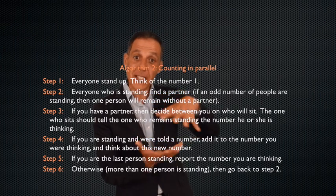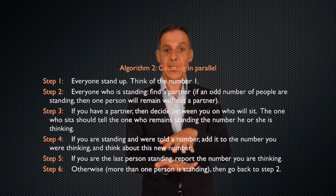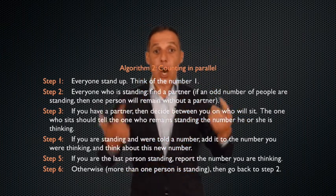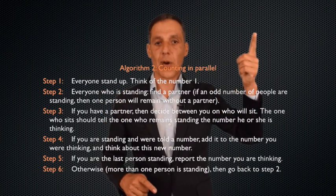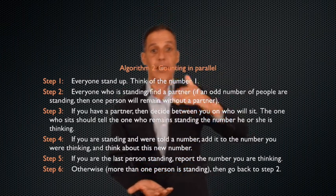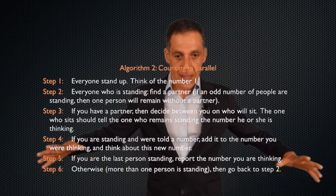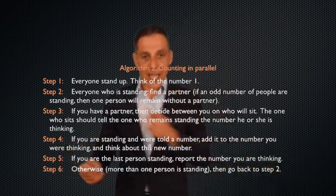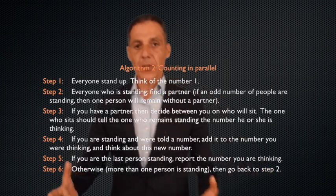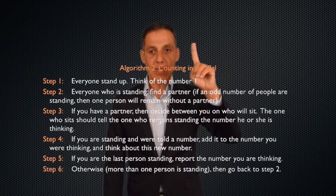But that count is distributed among 25 people. When there were 50 people standing, everybody had the number two. 50 times two is 100. They had the distributed count. Let's go back one more. 100 people are standing. They all have the count of one. 100 times one is 100. That count is staying the same, but it was distributed among 100 people, and then 50 people, and then 25 people, and then eventually 12, 6, 3, and eventually down to one. So I'm counting in parallel, and notice that it's incredibly efficient. You are all simultaneously counting. When I got 100 of you to stand up and 50 of you to sit down, you did half of my work for me in one step.